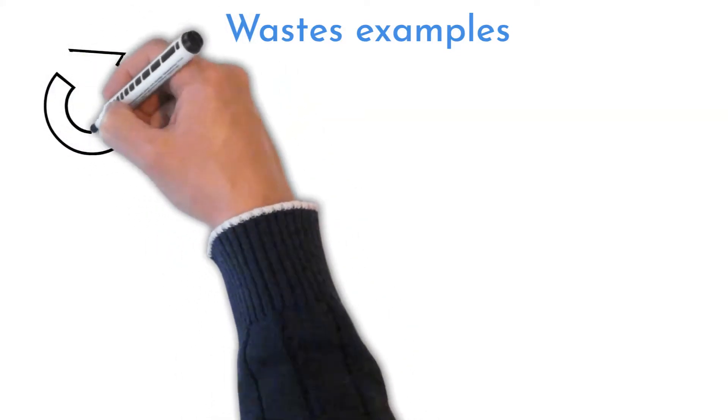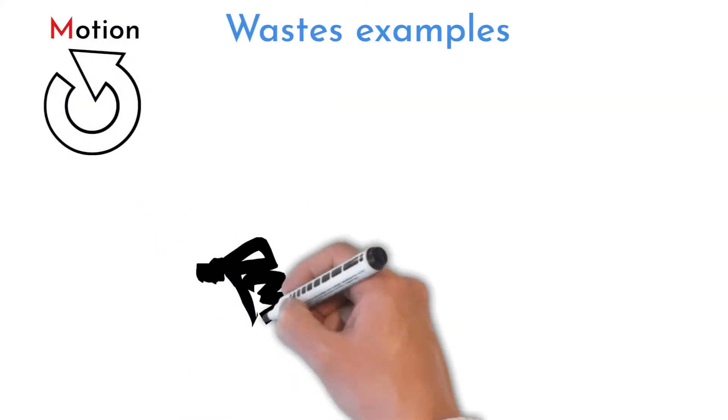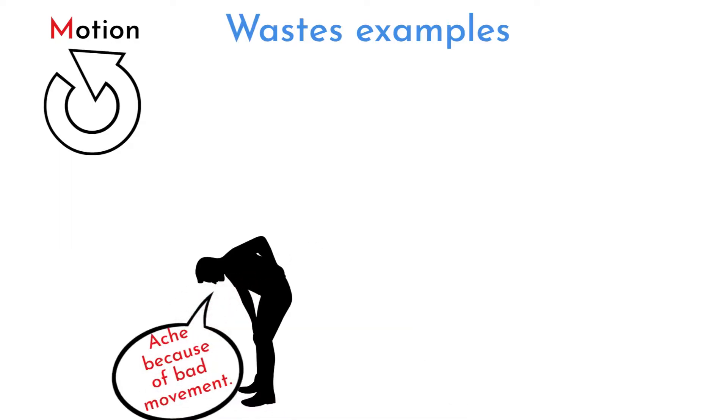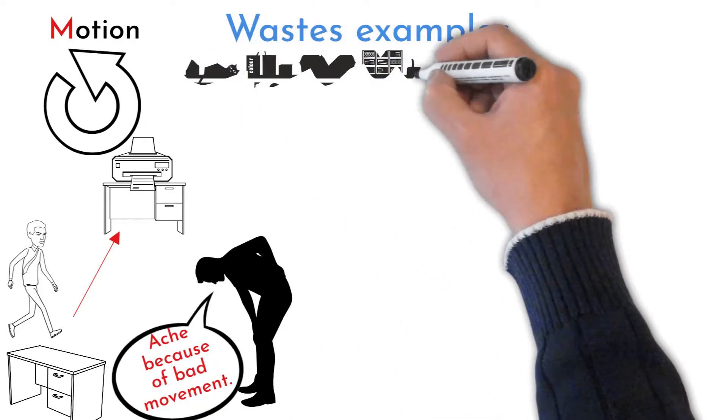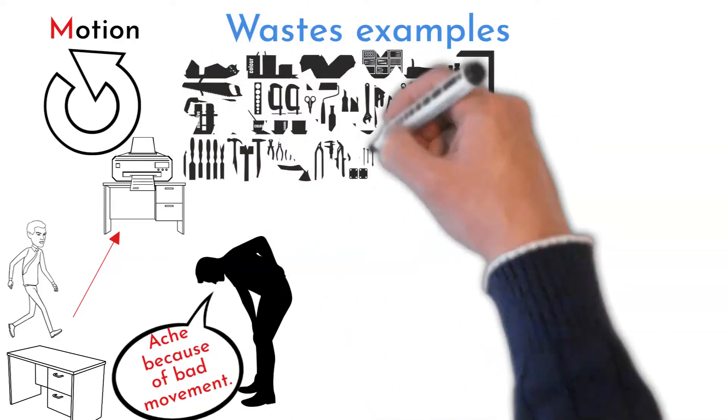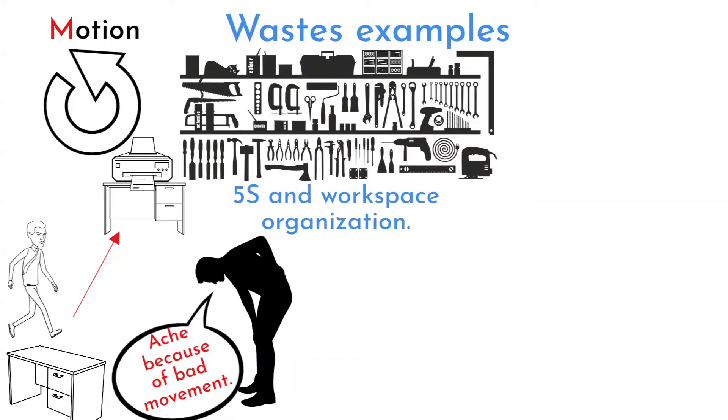Motion can be too many steps done by a person or not ergonomic movements during process or manipulation. Walking off into the cabinet on the other side of the room is an office example. Organize workspace to have often used tools nearby. Less used tools can be far away.